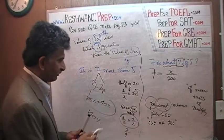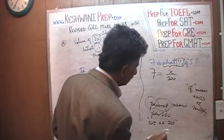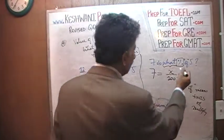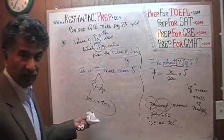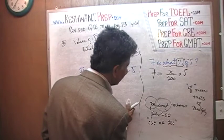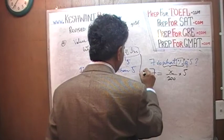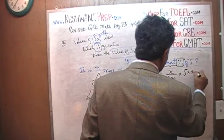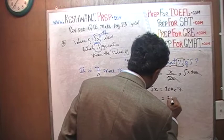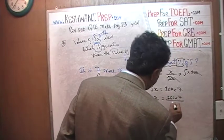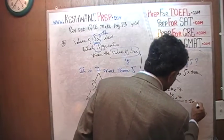So our equation is 7 = (x/100) × 5. Multiply both sides by 100, cancel the 100 on the right, giving 5x = 100 × 7. Therefore x = (100 × 7) / 5. There are twenty 5s in 100, so x = 20 × 7 = 140. Our answer is 140.